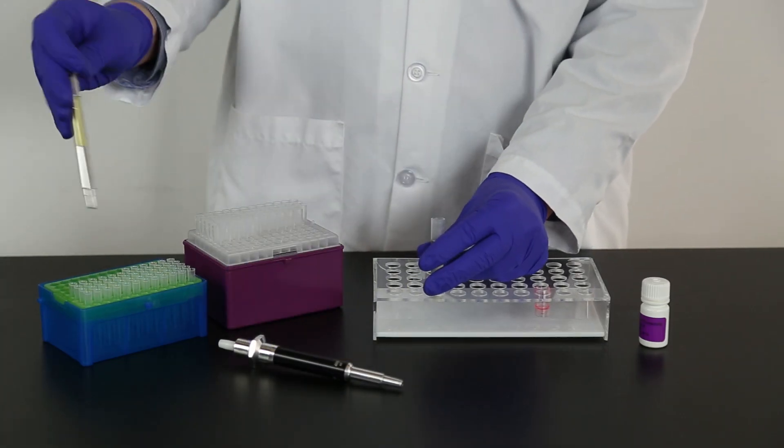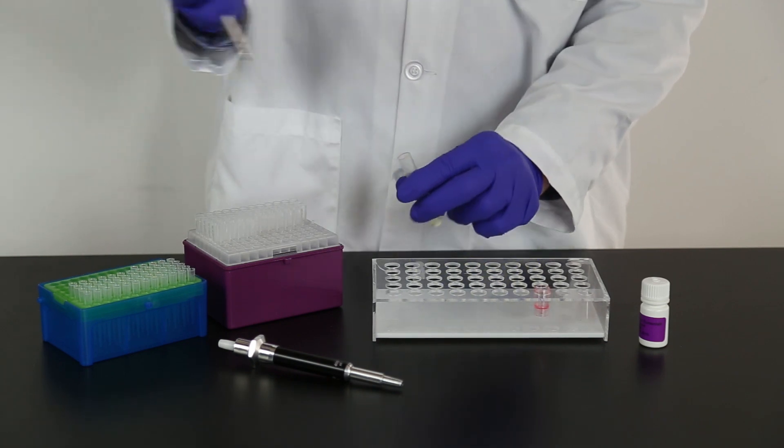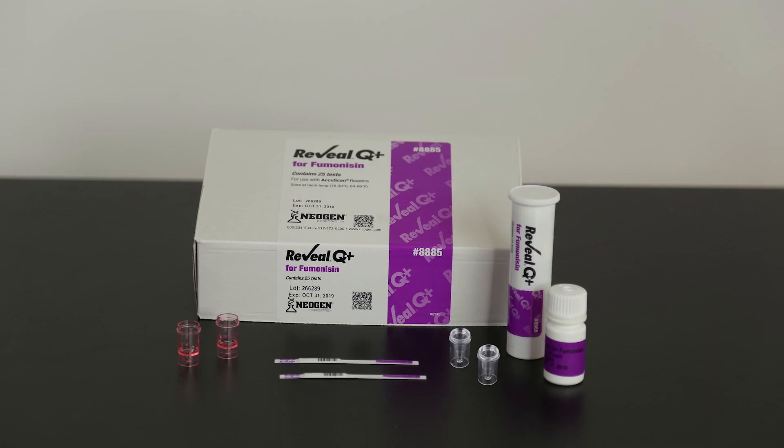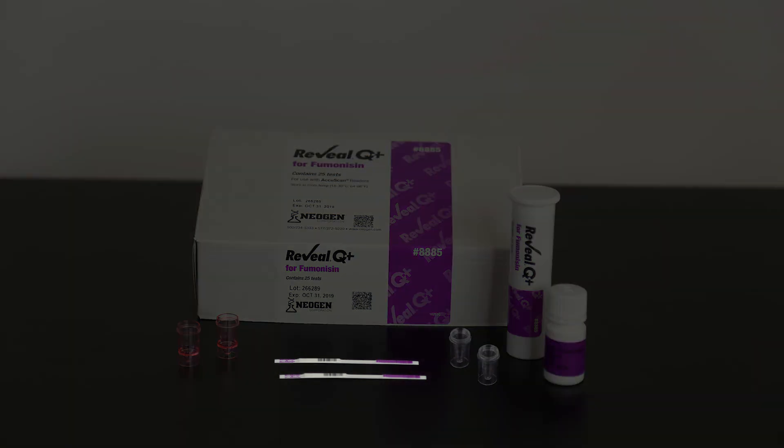Avoid cross-contamination by using clean extraction supplies for each sample. Each kit contains supplies to test 25 samples. The kit includes test strips, clear sample cups, red dilution cups, and a bottle of sample diluent.